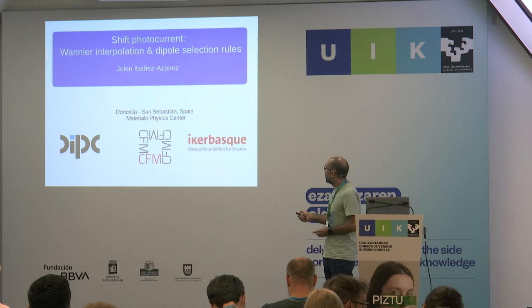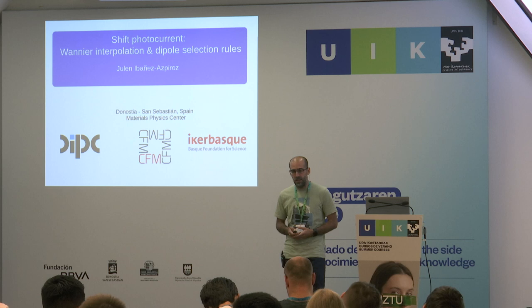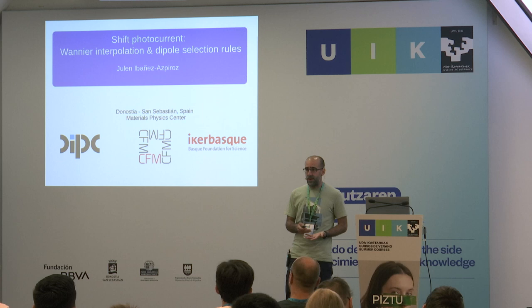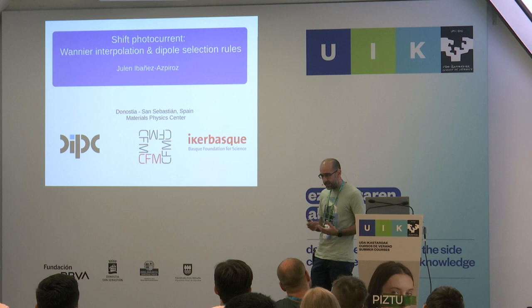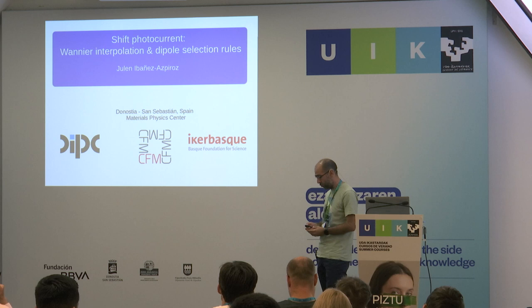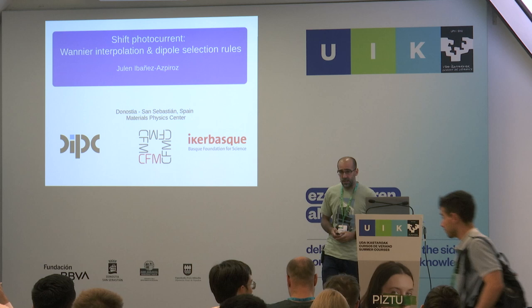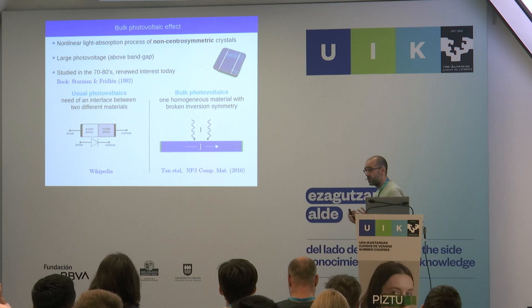We'll study how this is computed in actual calculations when we want to estimate it in real materials. You saw yesterday in the afternoon tutorial that this can be computed in the Wannier90 code and in WannierBerry. Today we'll see how this is computed by the so-called Wannier interpolation method, which was already mentioned by David but we'll go into more detail.